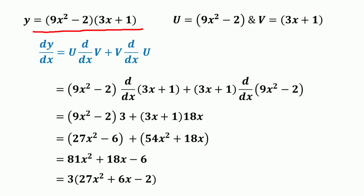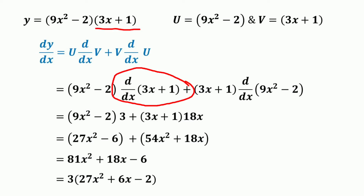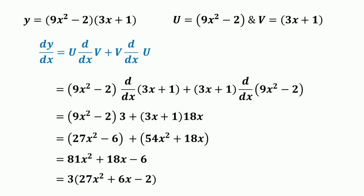Consider another function y is equal to (9x squared minus 2) into (3x + 1). We have two functions: the first is (9x squared minus 2) and the second is (3x + 1). Applying the product rule: take (9x squared minus 2) into d/dx of (3x + 1), plus (3x + 1) into d/dx of (9x squared minus 2).